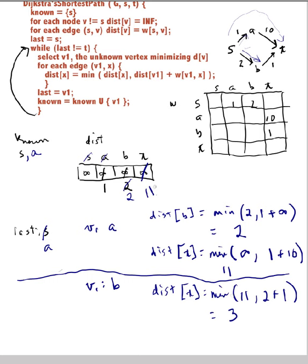So this goes to now 3. And I say last equals v1, so last now goes to B, and known goes to known union B.